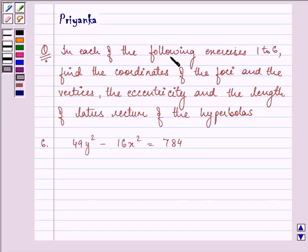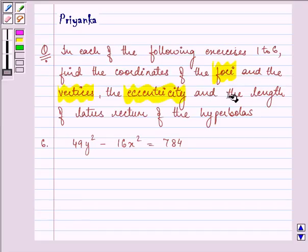It says, in each of the following exercises, 1 to 6, find the coordinates of the foci, the vertices, the eccentricity and the length of latus rectum.